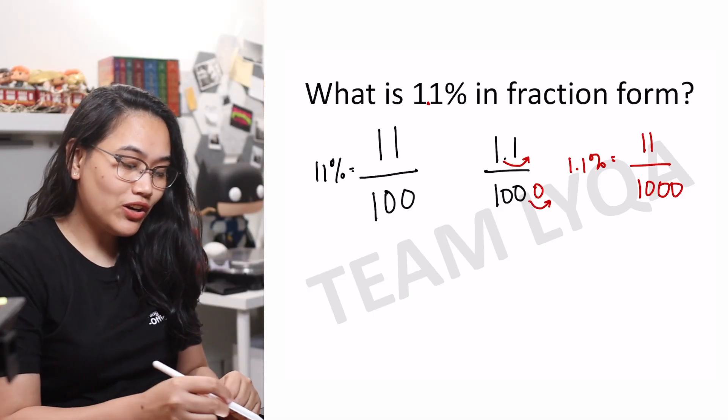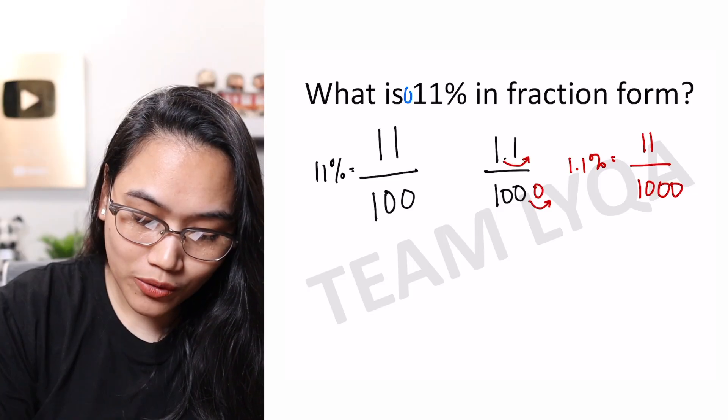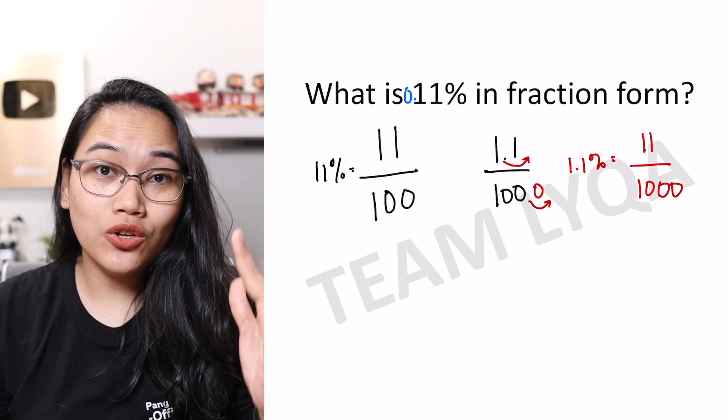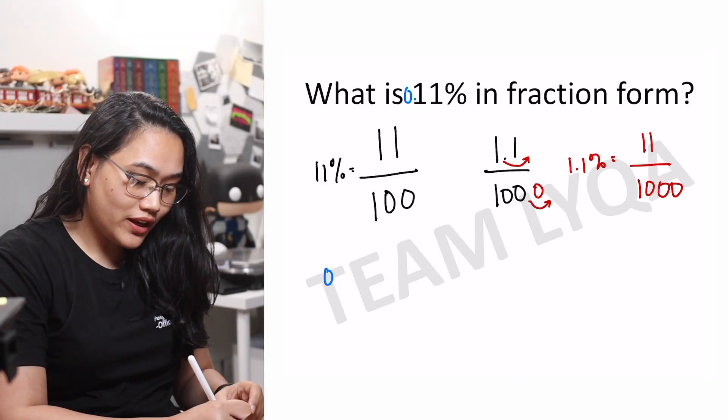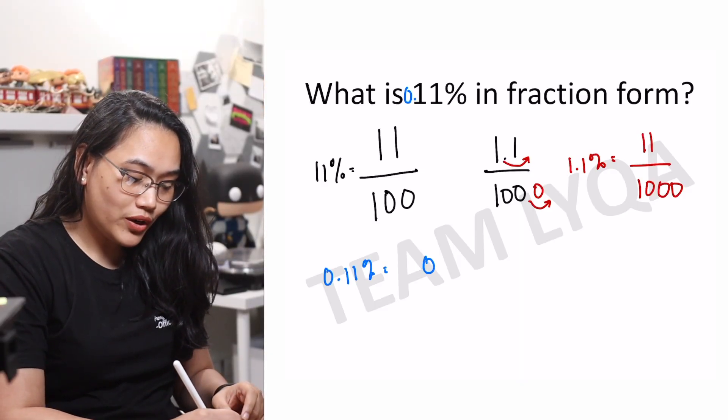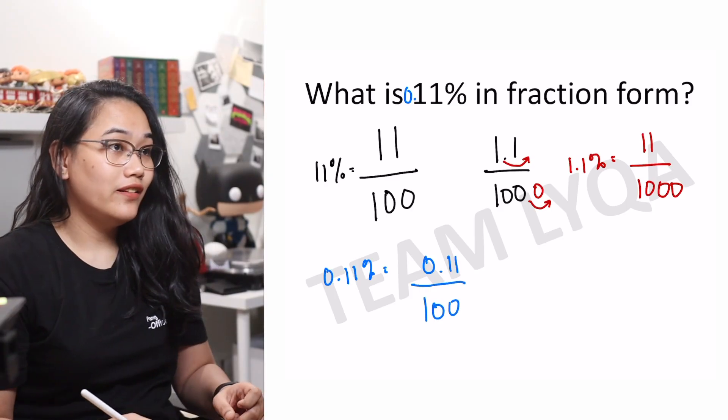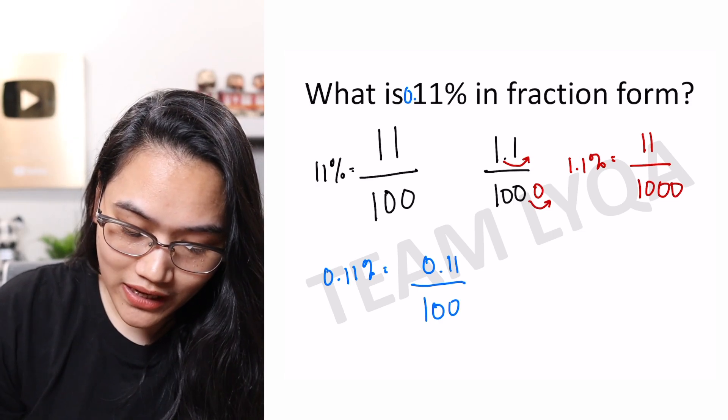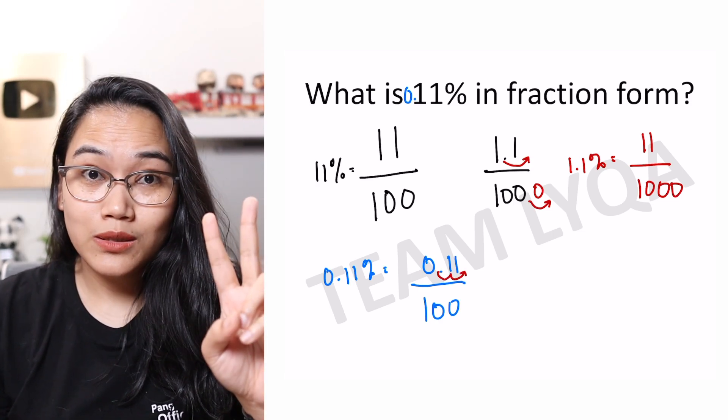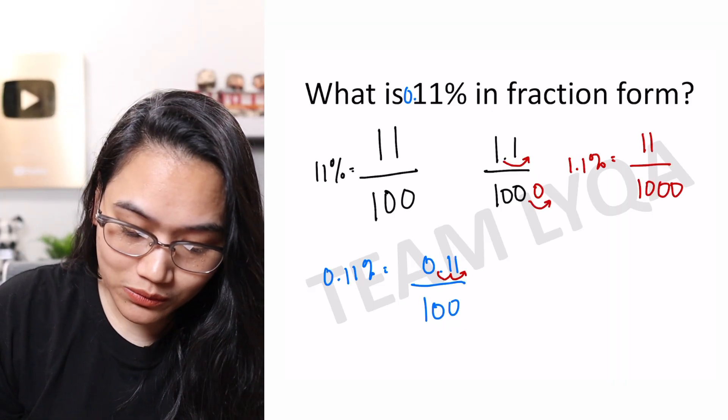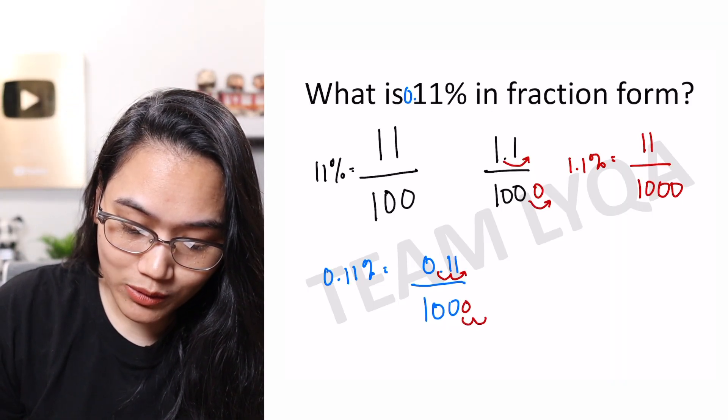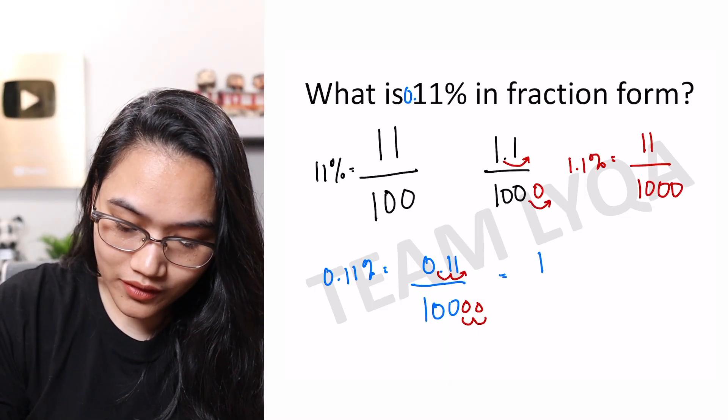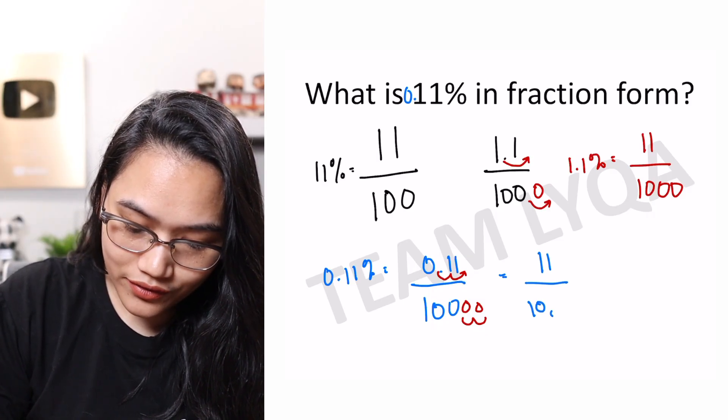Let's take it another step further. How about if we're looking for 0.11%? What do we do there? Again, following the percent idea, 0.11% is 0.11 over 100. Again, we don't want decimals on top, so we'll move the decimal place 1, 2, 2 spots or 2 places to the right, which means we'll multiply this by 100 as well.